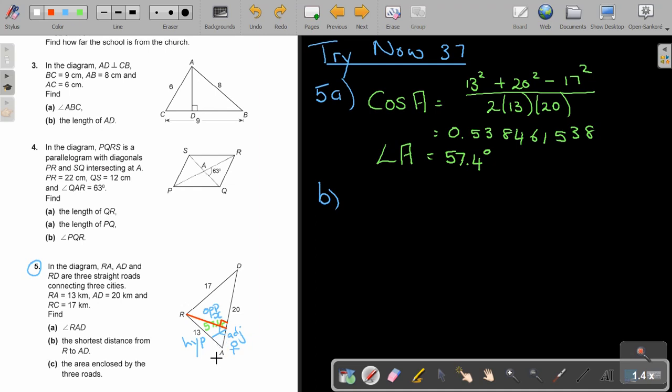If I'm looking at the side given and the side asked, it's opposite and hypotenuse. And now, I think of my words. SOHCAHTOA. If I'm starting here, it's going to be sin of that angle 57.4. And that must be opposite over hypotenuse.